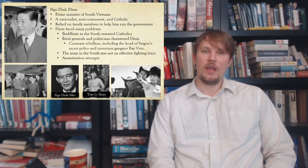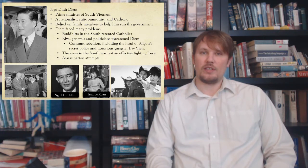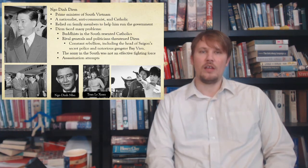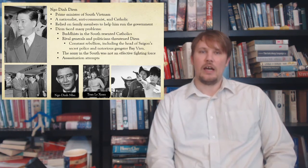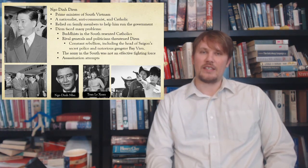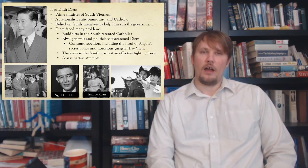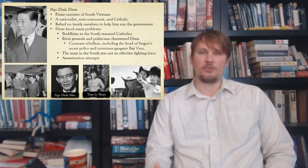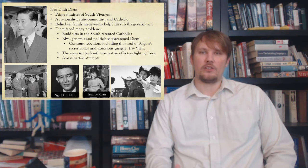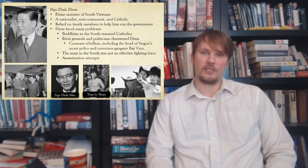As prime minister, Diem relied on family members to help run the government. He faced many problems: Buddhists in the South resented Catholics and saw Diem as favoring them; rival generals and politicians threatened him with constant rebellion, including one attempt by the head of Saigon's secret police, gangster Bay Vien. The army in the South was not an effective fighting force, and there were ongoing assassination attempts. Diem's brother Ngo Dinh Nhu was his chief political advisor and head of the secret police; his wife, Tran Le Xuan, was referred to as the Dragon Lady.